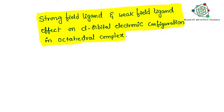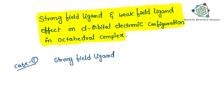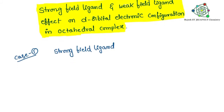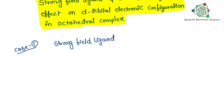Hello students, welcome to today's class. In today's class we are going to focus on a very simple and important point: how strong field ligands and weak field ligands affect the d-orbital electronic configuration in an octahedral complex. We are taking Case 1: if you take a strong field ligand in the octahedral complex, imagine the metal atom or ion has a d5 configuration.